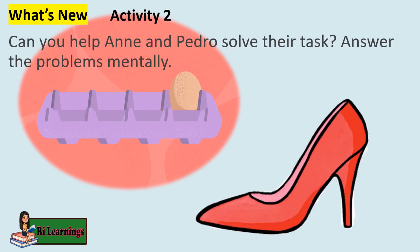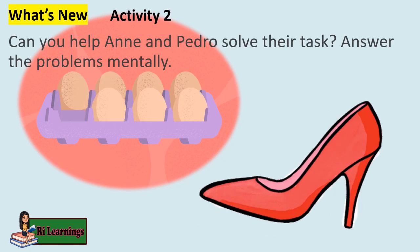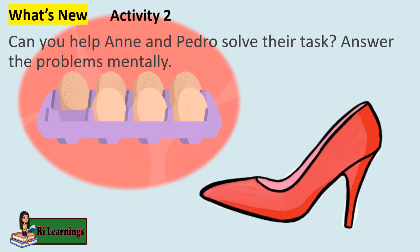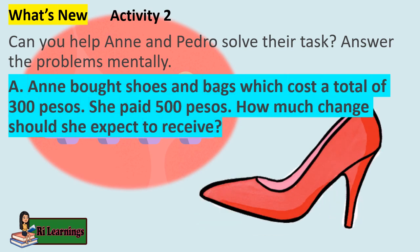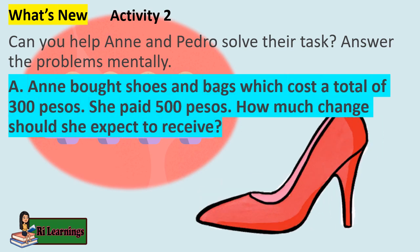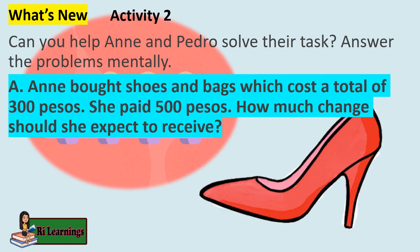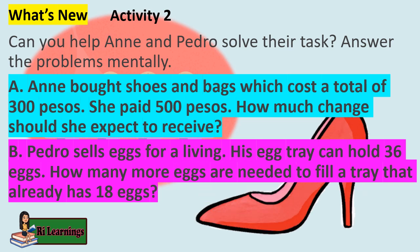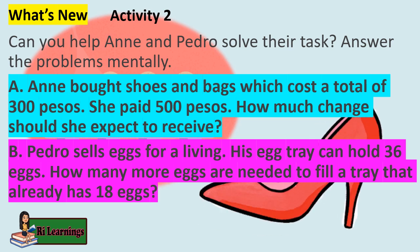What's New? Activity 2: Can you help Ann and Pedro solve their task? Answer the problems mentally. A. Ann bought shoes and bags which cost a total of 300 pesos. She paid 500 pesos. How much change should she expect to receive? B. Pedro sells eggs for a living. His egg tray can hold 36 eggs. How many more eggs are needed to fill a tray that already has 18 eggs?